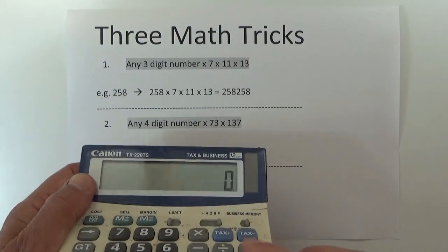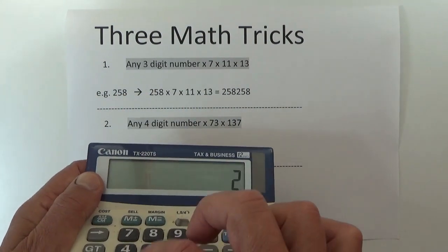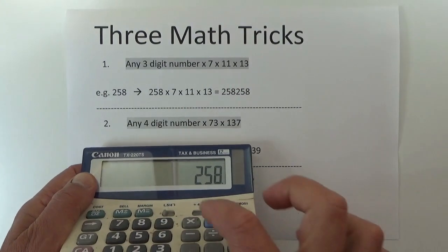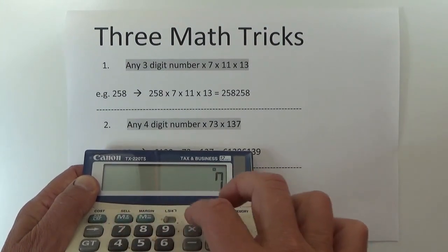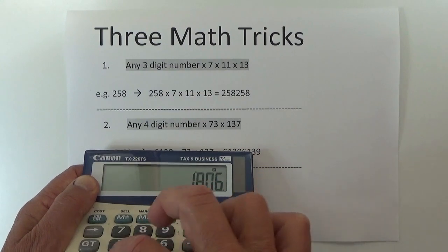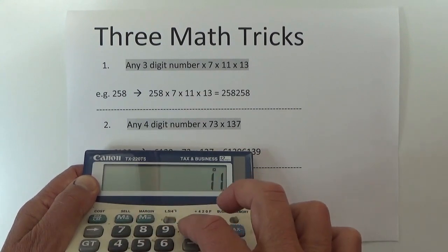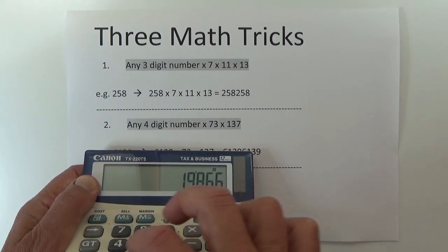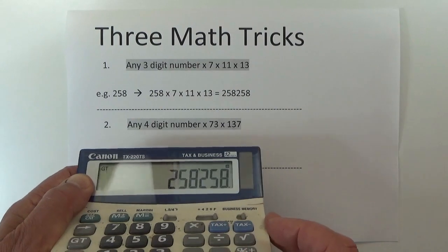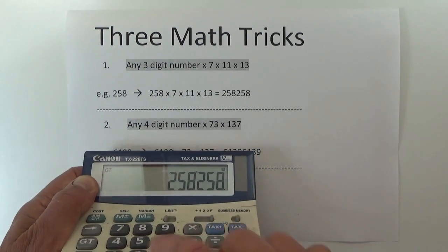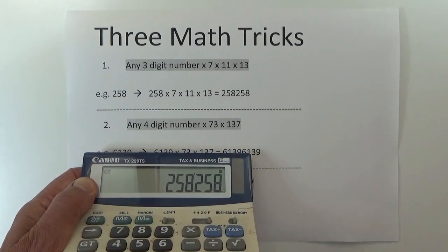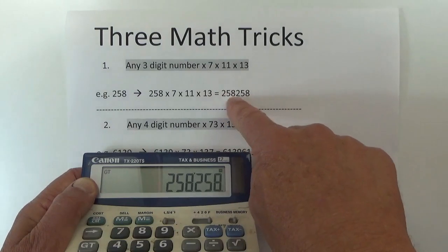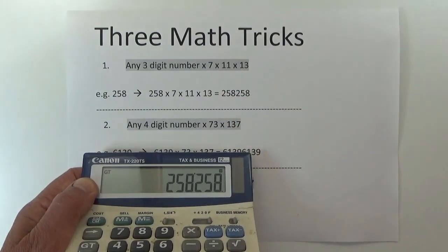So I'll punch that into my calculator — 258 — and multiply by 7, multiply by 11, and multiply by 13. And then the answer is 258258, which is 258258 as I've got there on the other piece of paper.